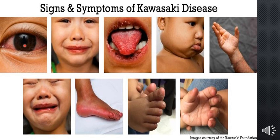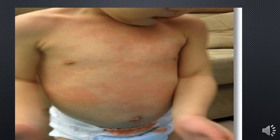This is the bulbar conjunctiva — non-purulent. This shows red lips, red tongue, and cracked lips. This shows swelling of the sole of the foot, with the palms and soles being red and swollen, followed by desquamation — peeling of the skin at the tips of fingers and toes. This is unilateral cervical lymph node enlargement. This is the polymorphous rash on the body — non-crusting and non-vesicular — a feature of Kawasaki disease.